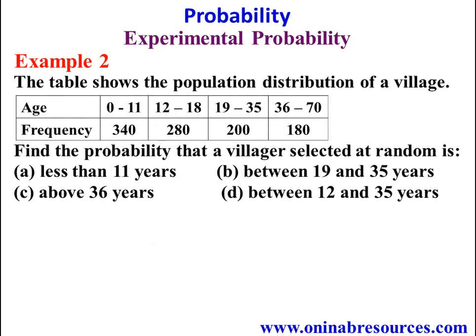We go to example 2. The table shows the population distribution of a village. The age distributions are 0 to 11, 12 to 18, 19 to 35, and 36 to 70, giving their respective frequencies as 340, 280, 200, and 180. Find the probability that a villager selected at random is: A) less than 11 years, B) between 19 and 35 years, C) above 36 years, and D) between 12 and 35 years.